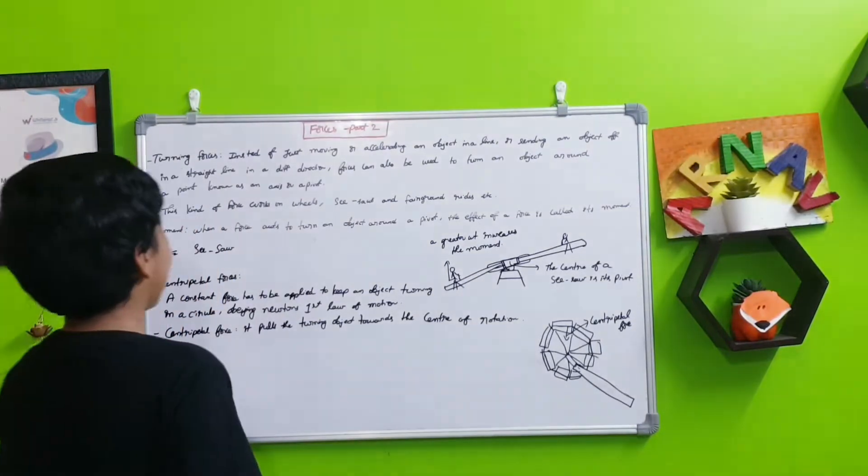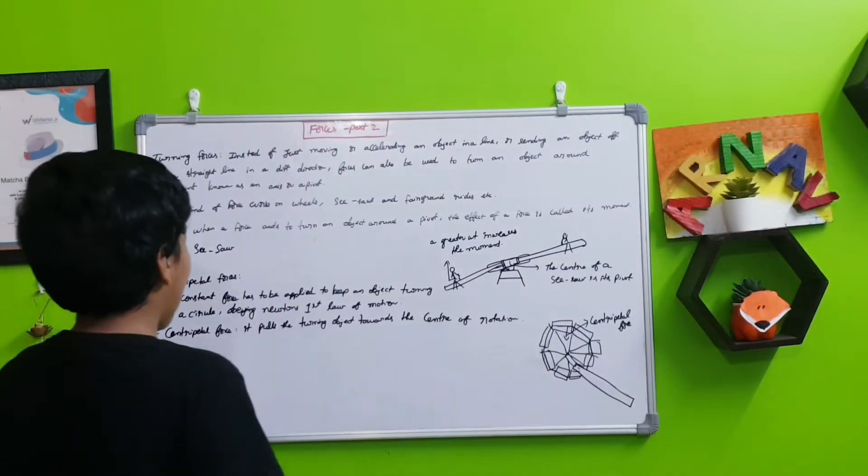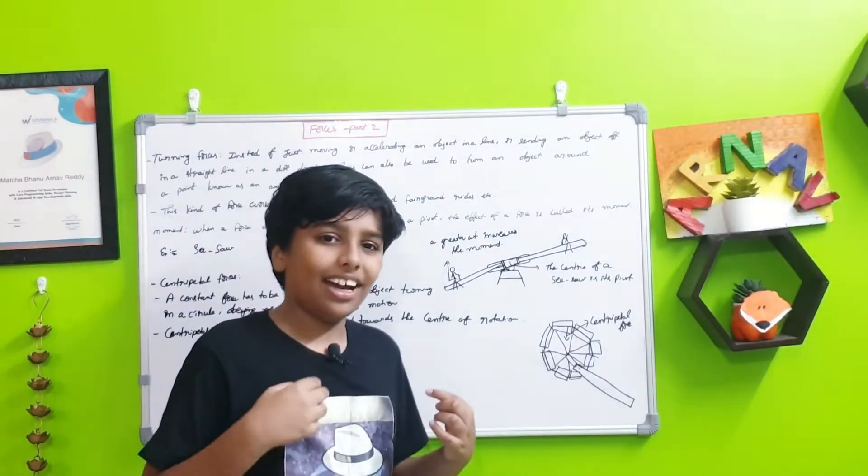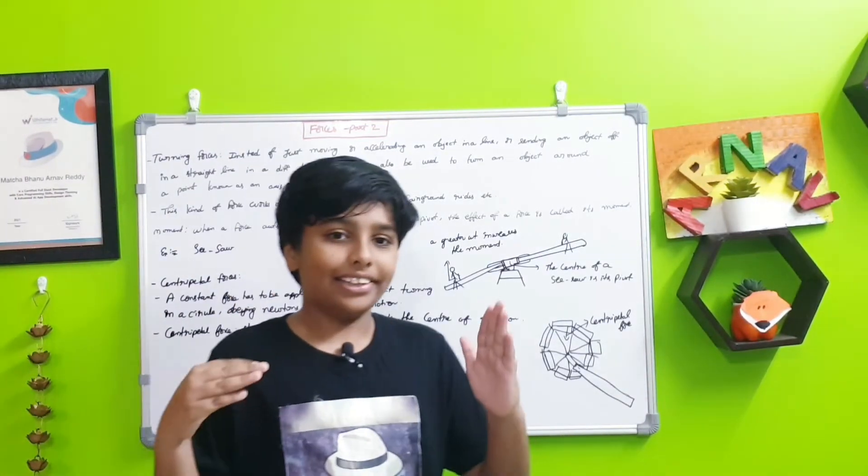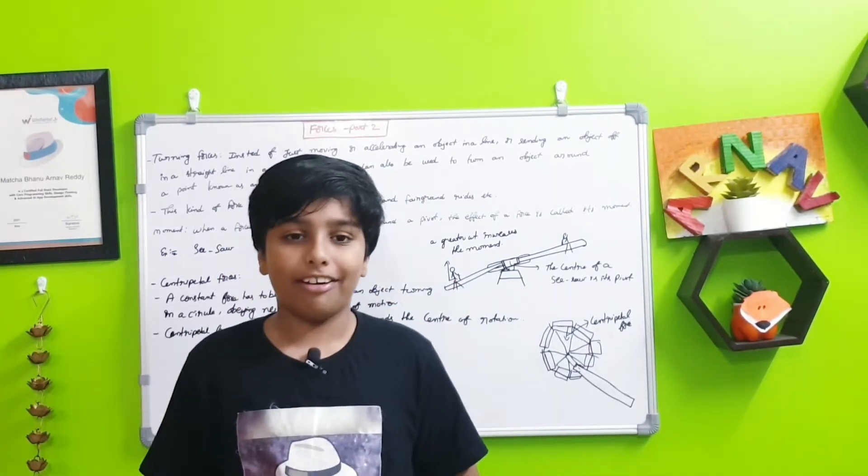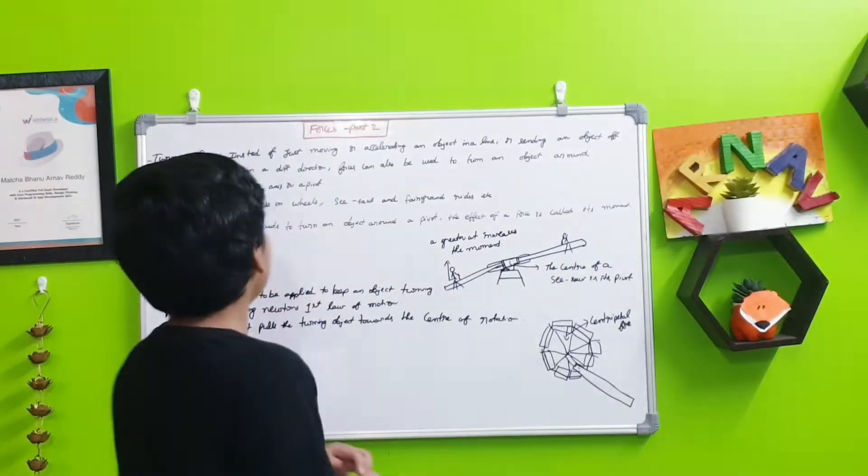Normally, other forces will move objects from like this or to there or any other way of moving an object. But turning forces will move anything around an axis point or pivot.